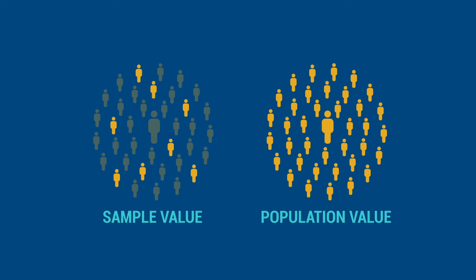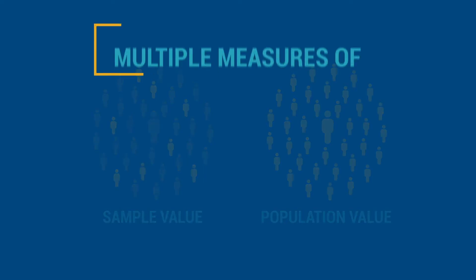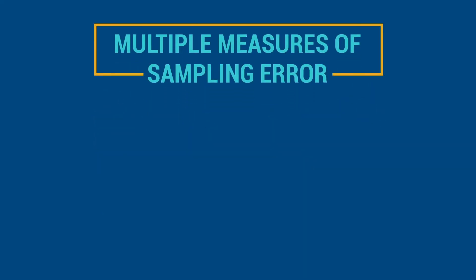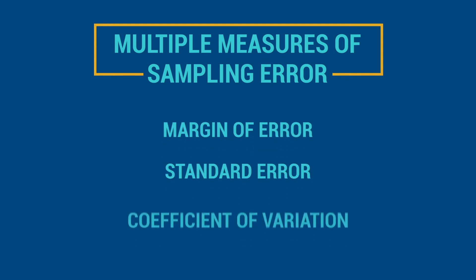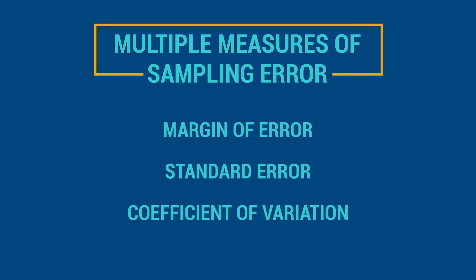To assess an estimate's reliability or precision, data users can use multiple measures of sampling error, such as margin of error, standard error, and coefficient of variation.